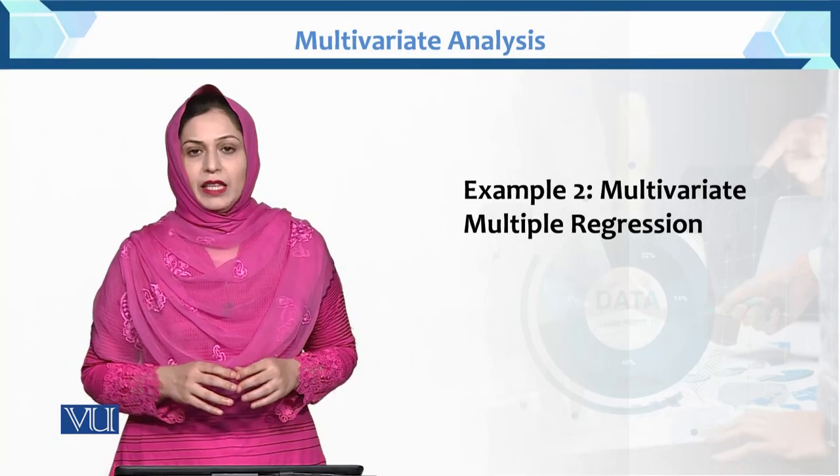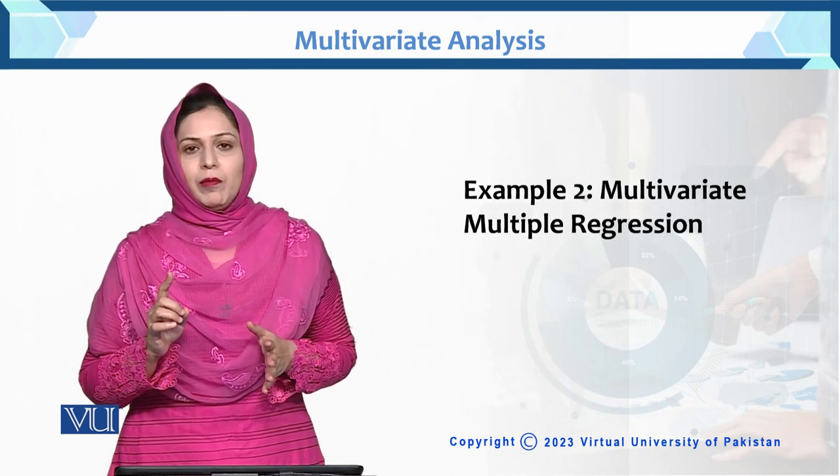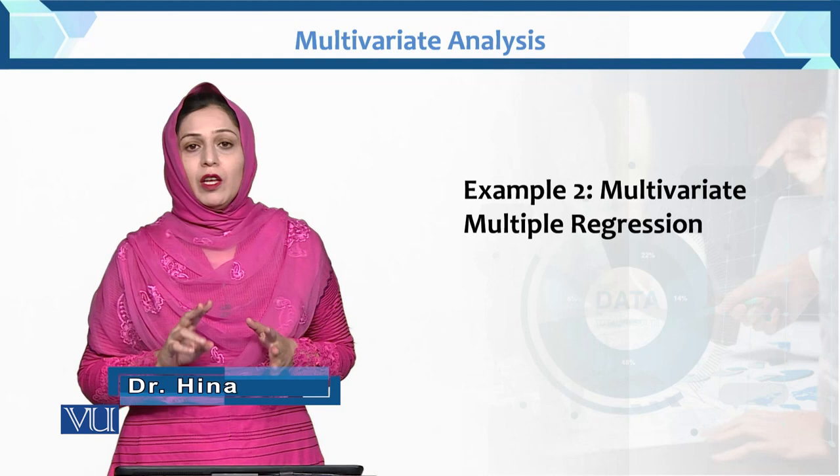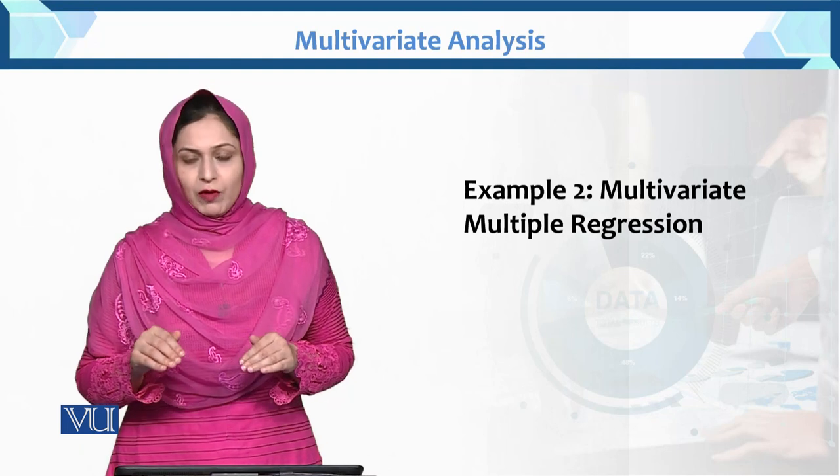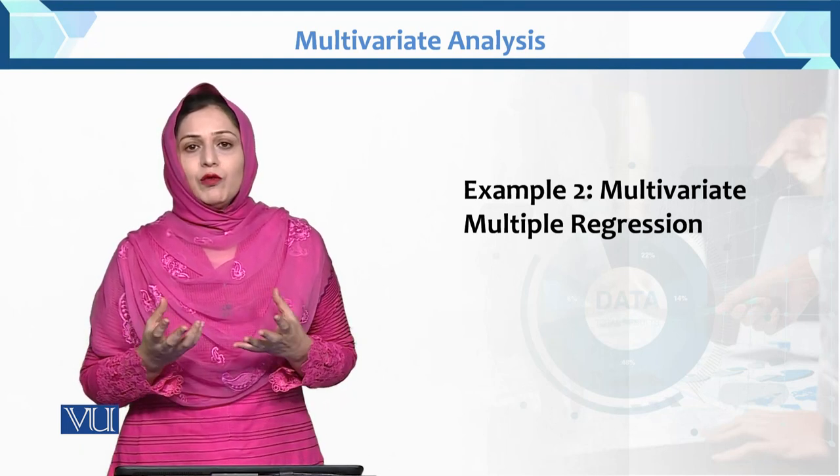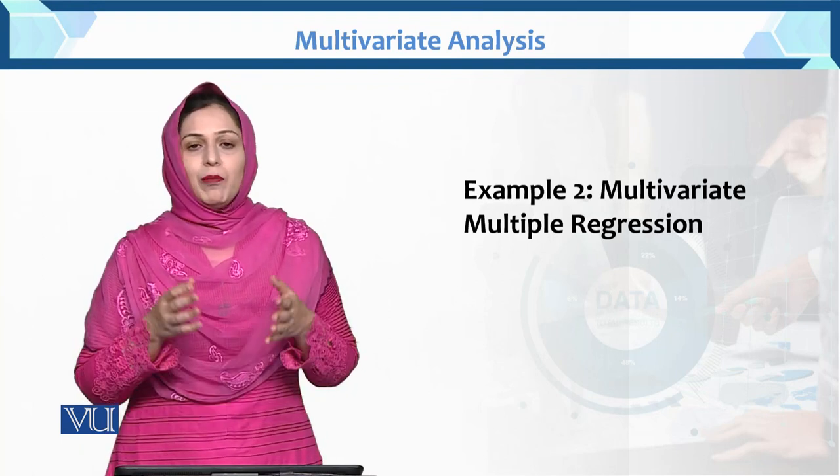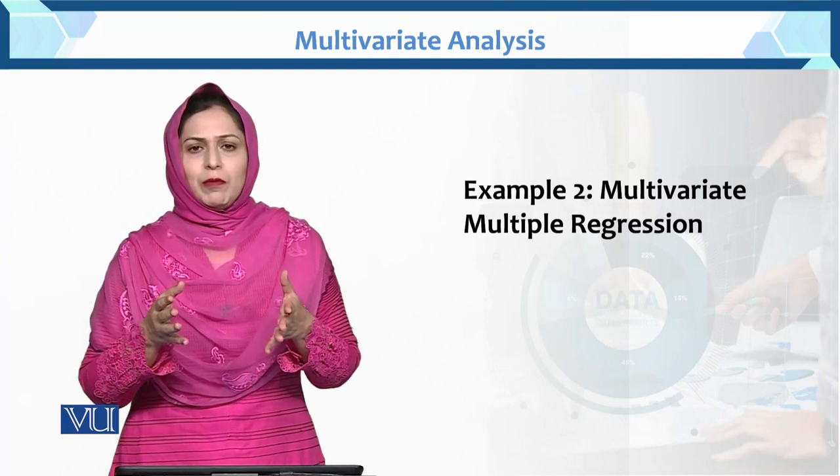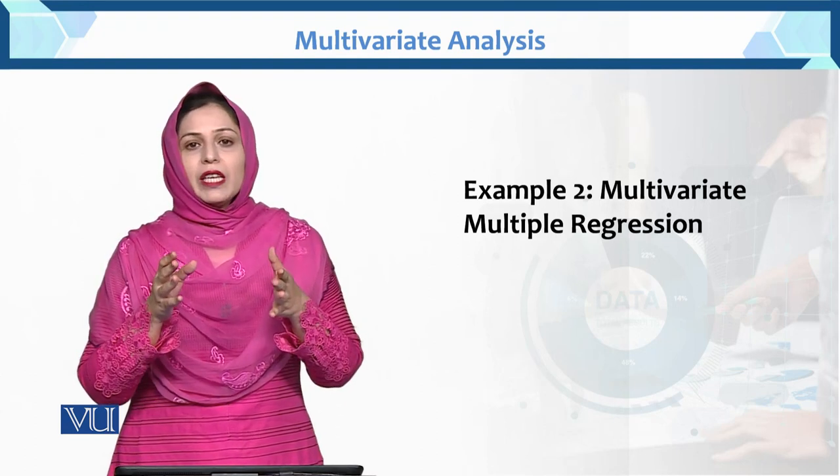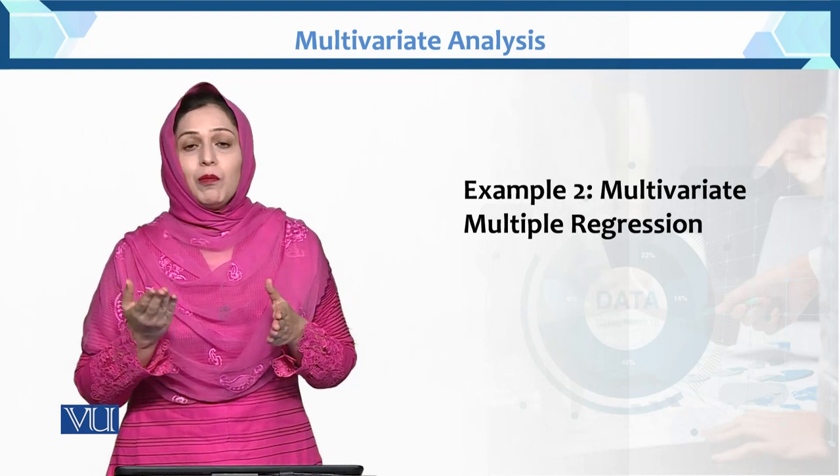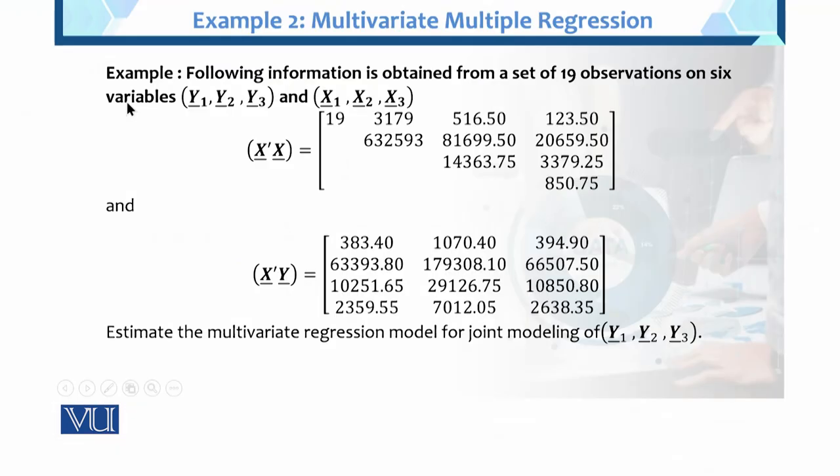Dear student, in the previous example we have seen one independent variable and two dependent variables using multivariate multiple regression. In this example, we have multivariate multiple regression. Sometimes we do not have the raw data available. We have calculated values given. When we have computations rather than raw values, we'll study how to use those calculations for multivariate multiple regression in this example.